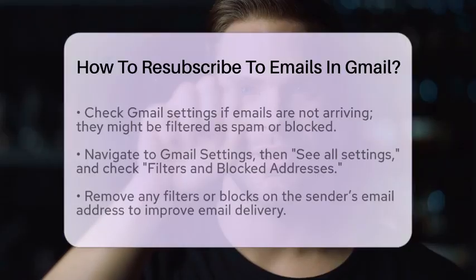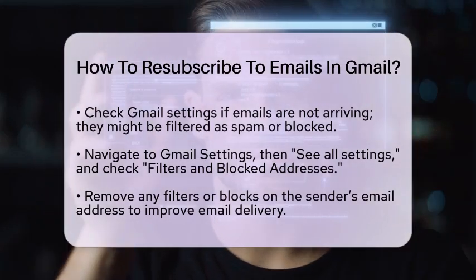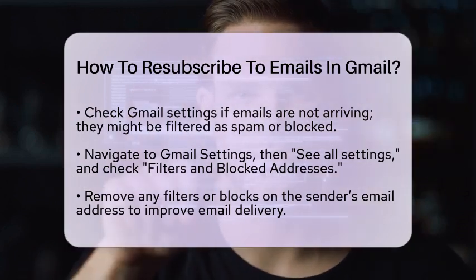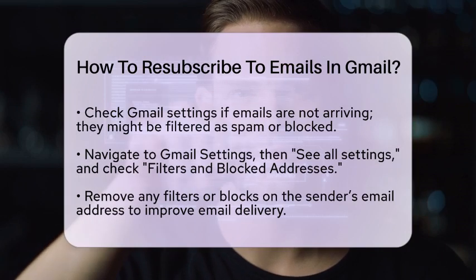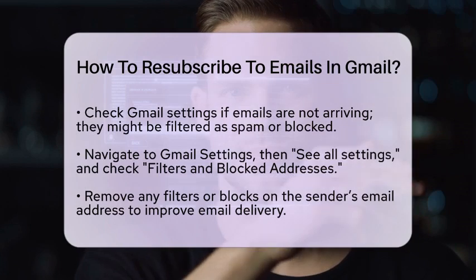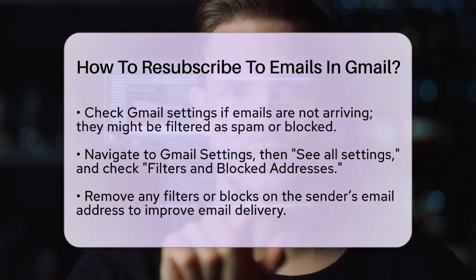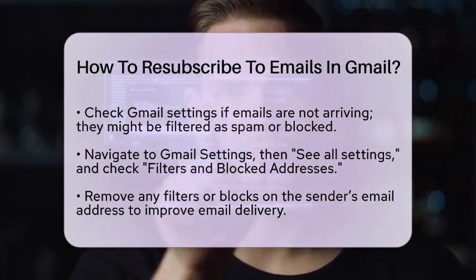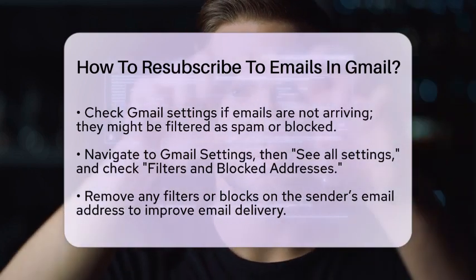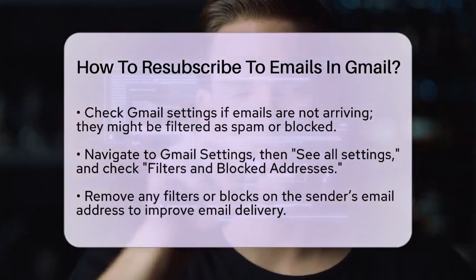Sometimes, emails do not arrive because Gmail is filtering them as spam or blocking them after you unsubscribed. To fix this, you can adjust your Gmail settings. Go to Gmail settings, then click on See All Settings, and navigate to Filters and Blocked Addresses. Check if the sender's email is blocked or filtered. If it is, remove any filters or blocks that prevent emails from arriving. Adding the sender's email address to your contacts or safe senders list can also help improve delivery.